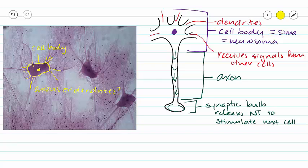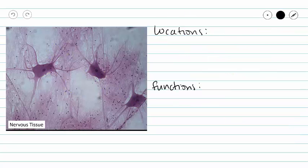That is going to have to remain a mystery to us. But what we can identify very specifically is our neurosoma or our cell body. And we are going to see those in every slide of nervous tissue. So now that we can tell what we are looking at here, we can get some more specific information.